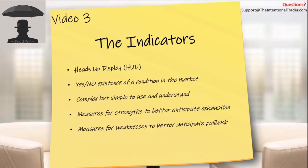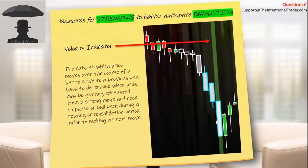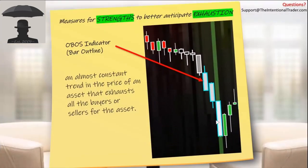On our trading charts in the trade room, we have our velocity indicator. This is the rate at which price moves over the course of a bar relative to previous bars, used to determine when price may be getting exhausted from a strong move. We're measuring a strong move, and price needs to pause or pull back during a resting or consolidation period prior to making its next move. Whether it's up or down we don't know — we just know that it's very likely that this is going to be a good point for that to happen.